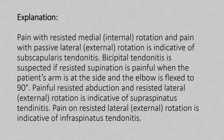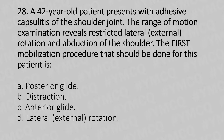Now let's move to our 28th question. A 42-year-old patient presents with adhesive capsulitis of the shoulder joint. The range of motion examination reveals restricted lateral or external rotation and abduction of the shoulder. The first mobilization procedure that should be done for this patient is: Option A: posterior glide. Option B: distraction. Option C: anterior glide. Option D: lateral or external rotation.